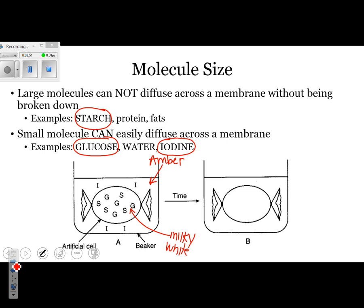First one we're going to look at is iodine. Iodine, if we refer up to the top, is a small molecule. Since it's a small molecule, that means it's going to be able to pass through or diffuse across the membrane. Notice that it's also inside the artificial cell now, not just outside.